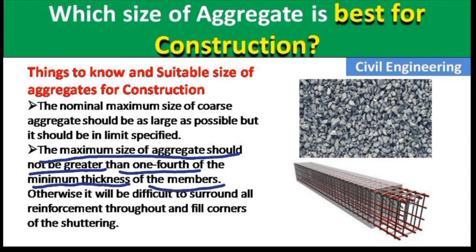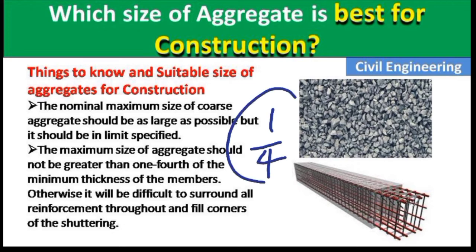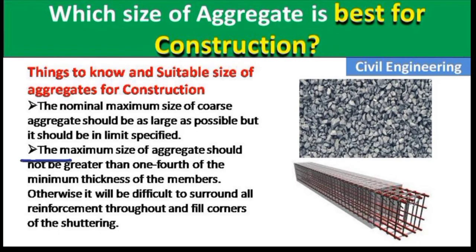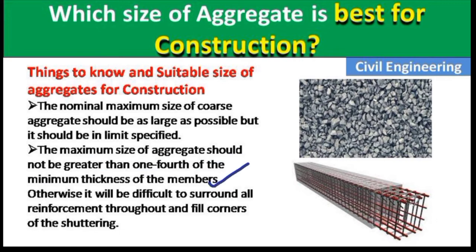Here you can see this is a beam and its thickness is, for example, one foot. So the aggregate used in this beam should not be greater than one fourth of this depth. This is a very important point: the maximum size of aggregate should not be greater than one fourth of the minimum thickness of the member — such as a slab, beam, or column.